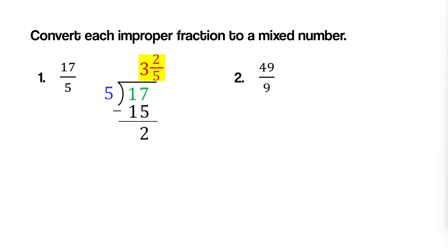Let's convert forty-nine-ninths to a mixed number. Divide the numerator by the denominator. Nine can go into forty-nine five times with a remainder of four. The quotient five is the whole number part, and the remainder becomes the numerator and the divisor as the denominator. So you get five and four-ninths.